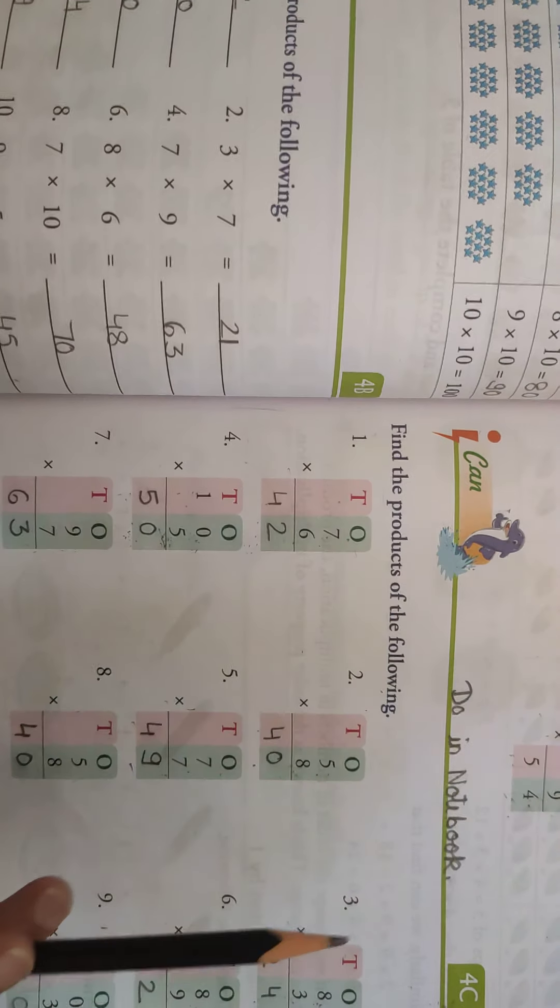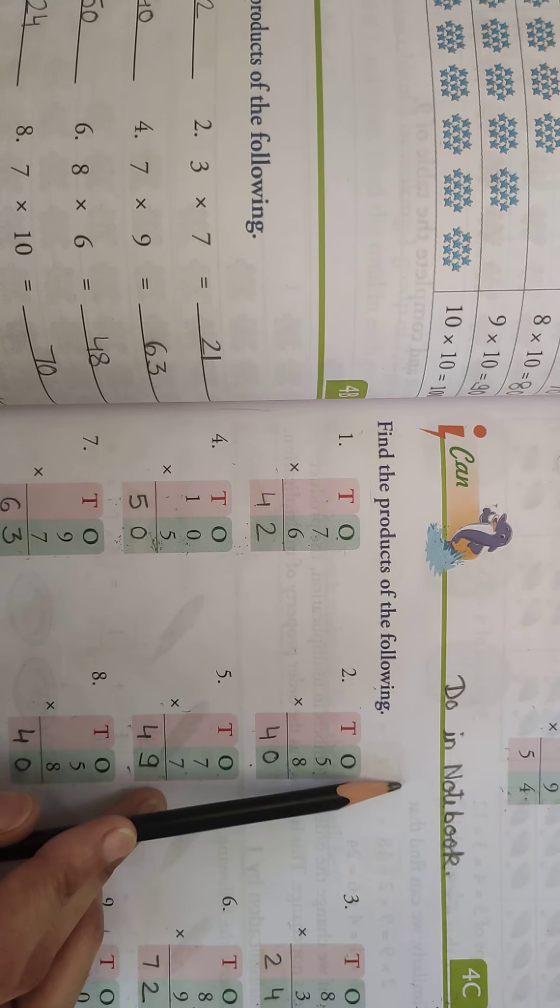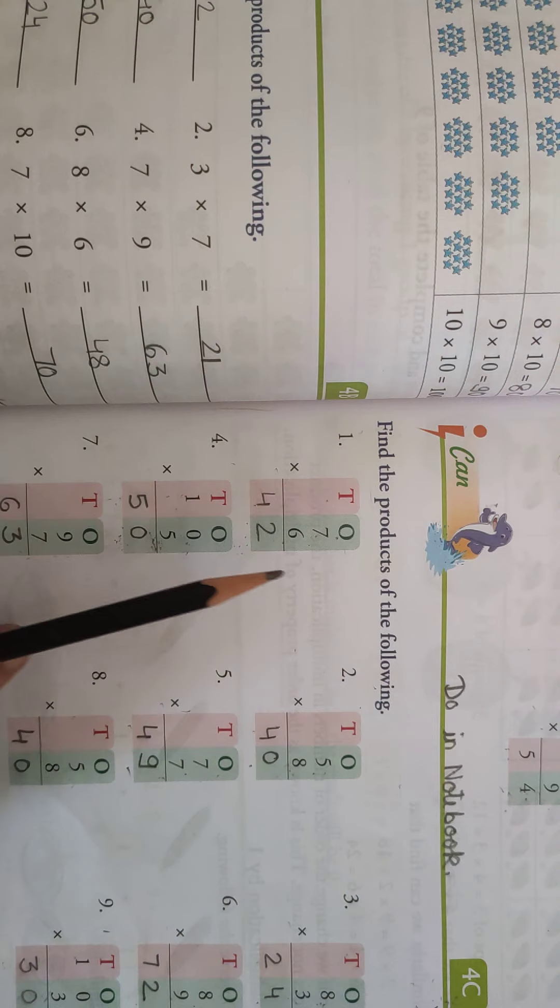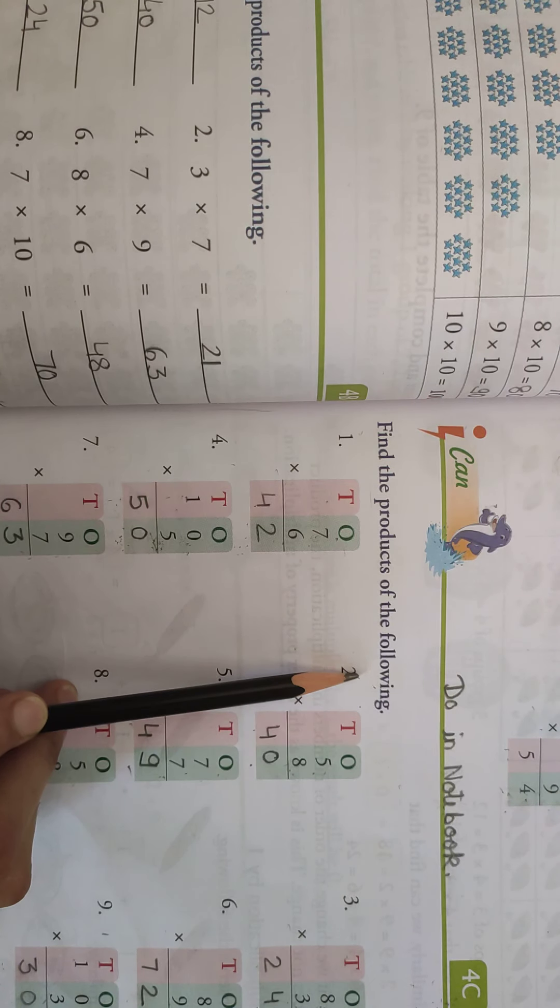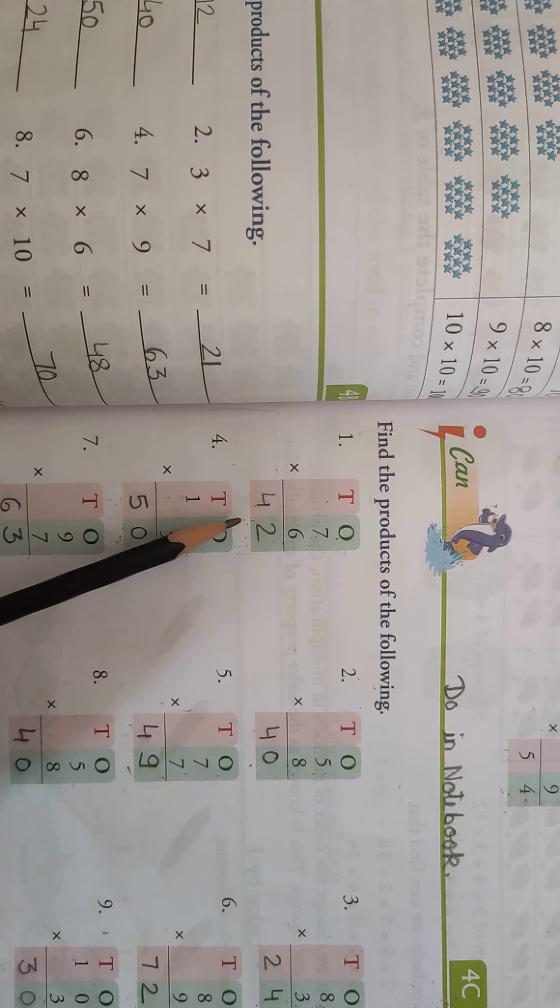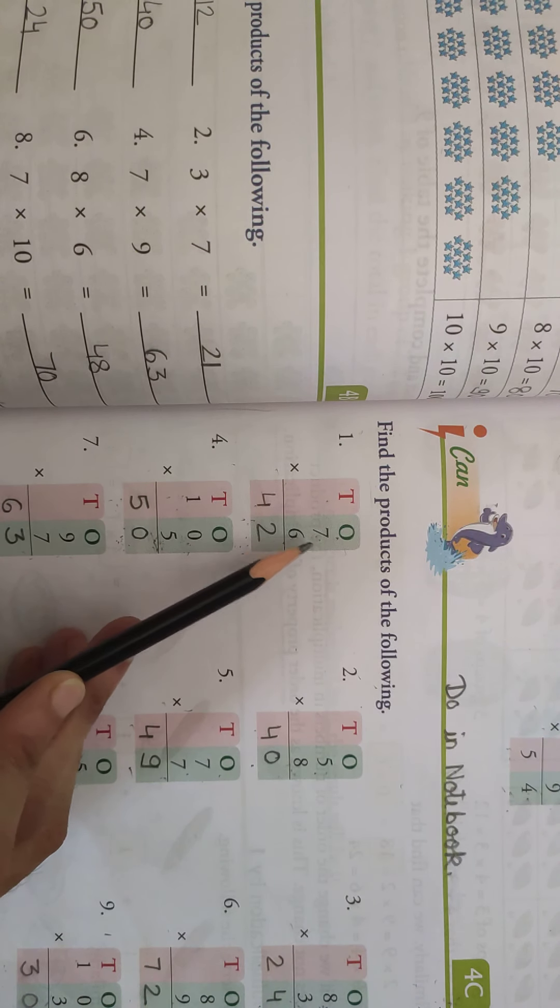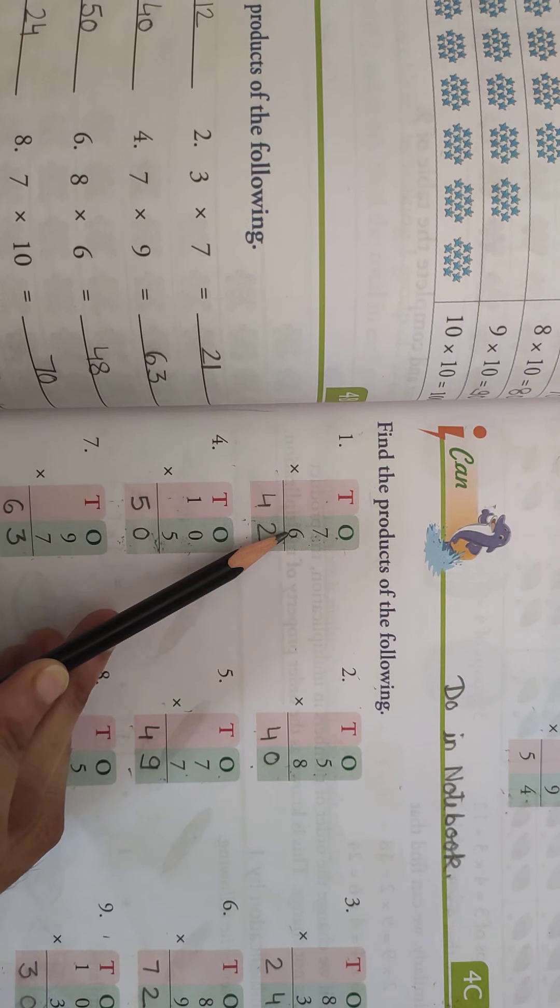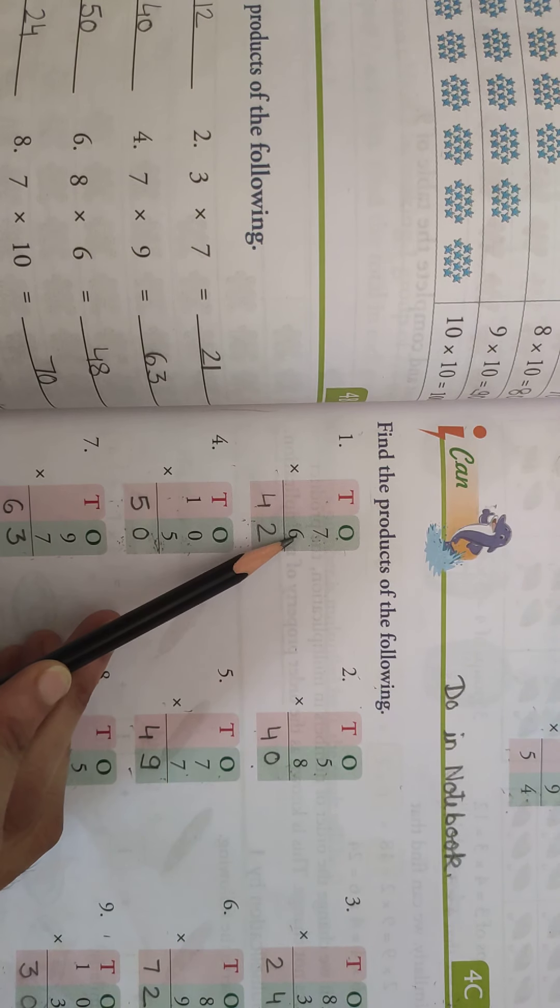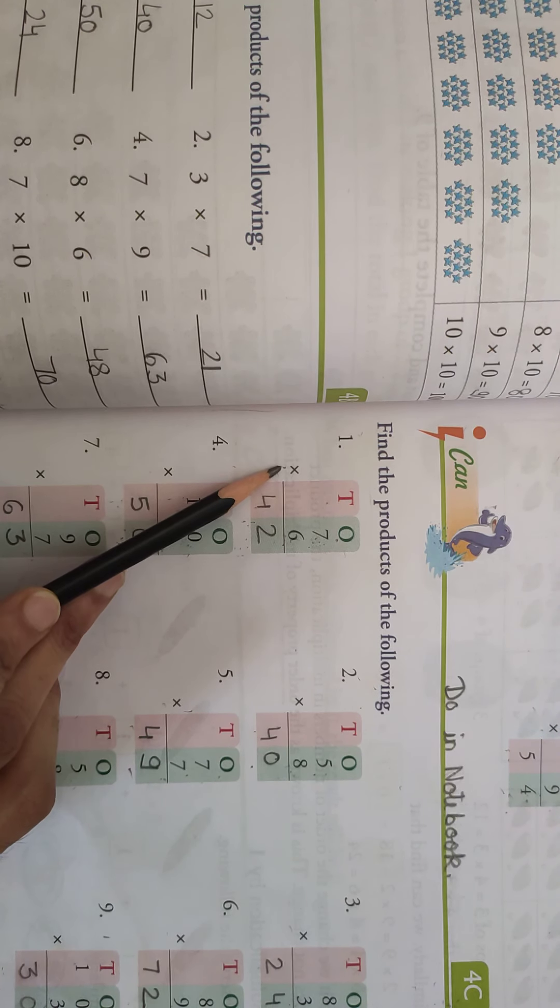Okay, now we will do this, I can. Okay, you will do this exercise in your notebook. Do in notebook, 4C. Find the product of the following, students, I have to tell you, product kya hota hai. See, these are the factors. Okay, ye kya hota hai, factor hota hai. 7 or 6 kya hai, factor hai, q factor hai, kyunki hame in donu ko, ek dusre se.